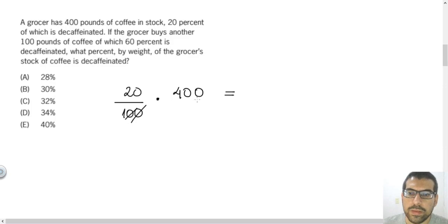We can cancel out the zeros from the 100 in the denominator with the 400 in the numerator. I cancel out both zeros from 100 with the two zeros from 400. And now I just have 20 times 4 because the denominator is 1. So 20 times 4 will be 80. So from this 400 pounds, 80 pounds is decaffeinated.